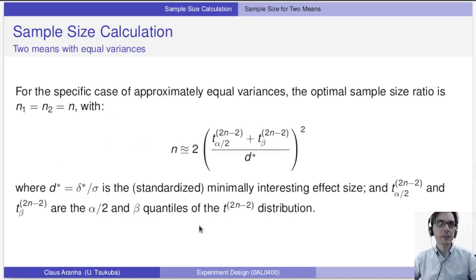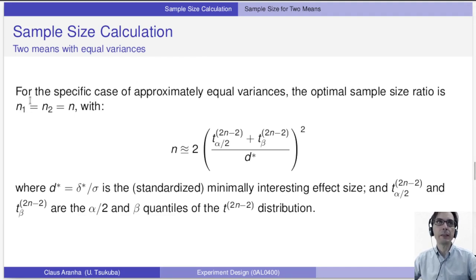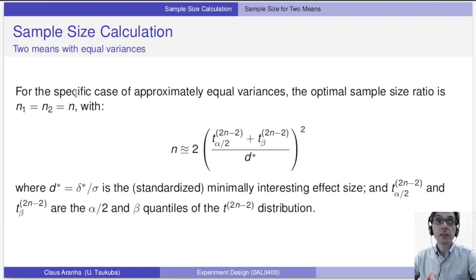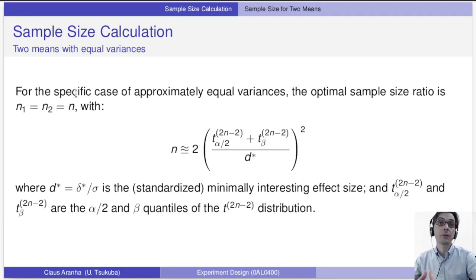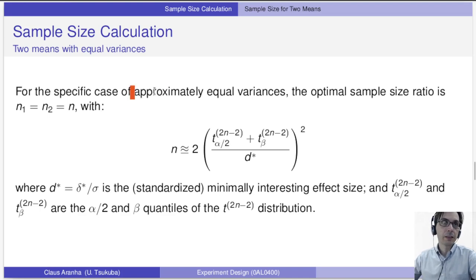The calculation of the sample size follows a specific formula. If both samples have approximately equal variances, the optimal ratio of sample sizes is n1 equal to n2 equal to n. This is an important observation: it's not necessary that both samples have the exact same size for a fair experiment. The sample size should be roughly proportional to the variance of each sample, because the idea of having multiple observations is to reduce the effect of variance. So samples with larger variance should have larger sample size.